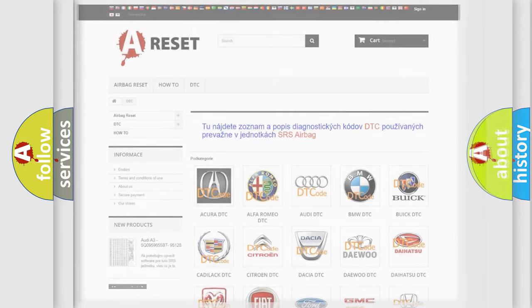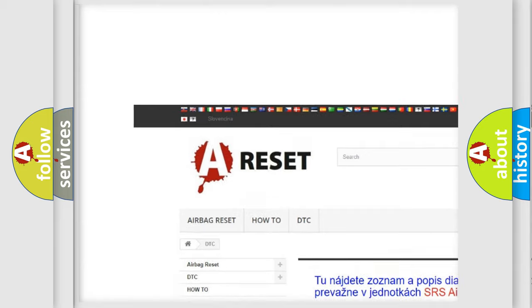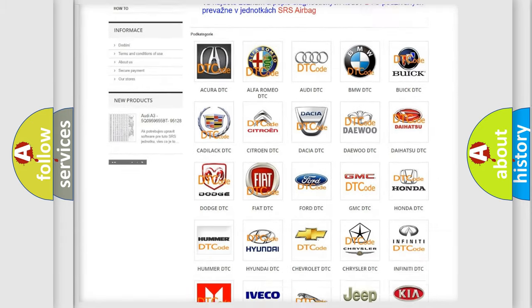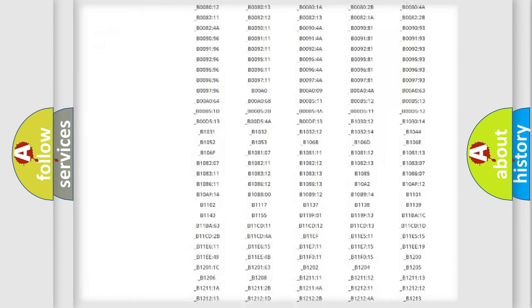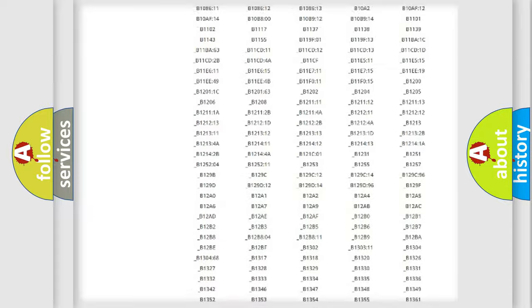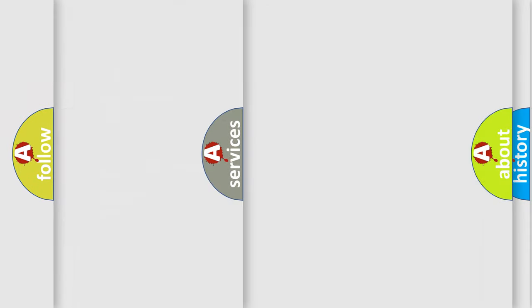Our website airbagreset.sk produces useful videos for you. You do not have to go through the OBD2 protocol anymore to know how to troubleshoot any car breakdown. You will find all the diagnostic codes that can be diagnosed in Toyota vehicles, and many other useful things.